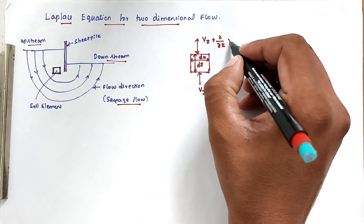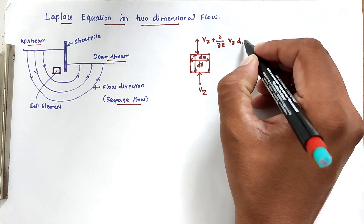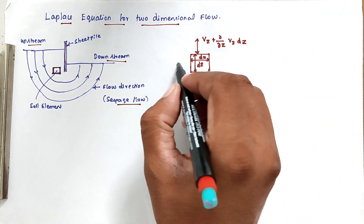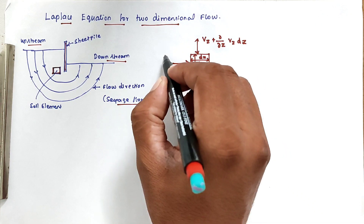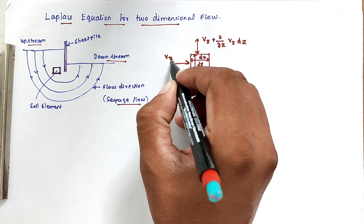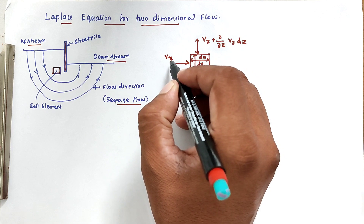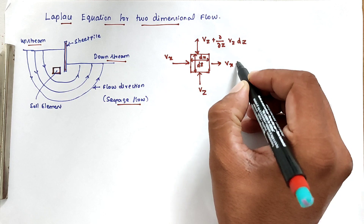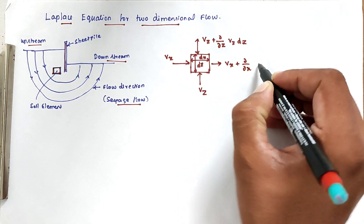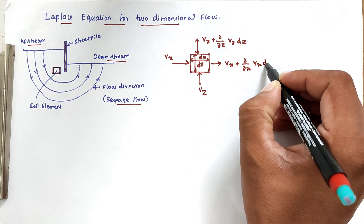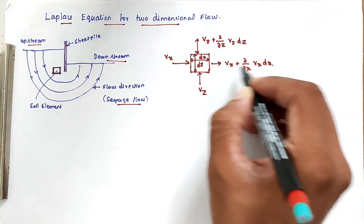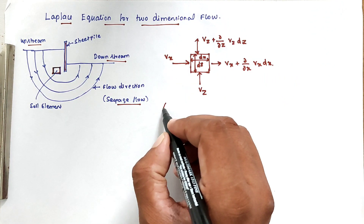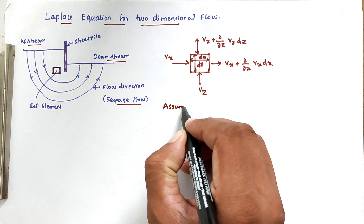dz is the height of the element. Likewise, the inlet velocity in the x direction is Vx, and the water outflow in the x direction is Vx plus (∂Vx/∂x)·dx. This is the velocity of outflow. Now we need to know the assumptions made by Laplace.